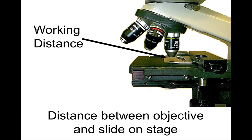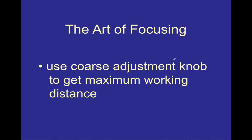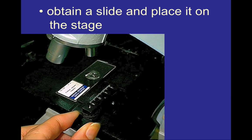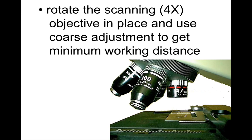The working distance is the actual distance between the edge of the objective lens and the microscope slide sitting on the stage. Working distance is also affected by total magnification. As you are taking a new microscope slide and getting ready to view it, you always want to make sure the working distance is at its maximum. The coarse adjustment knob adjusts the working distance between the objective lens and the stage, so increase that working distance as much as possible before placing a microscope slide onto the stage to ensure you're not damaging the objective lenses.